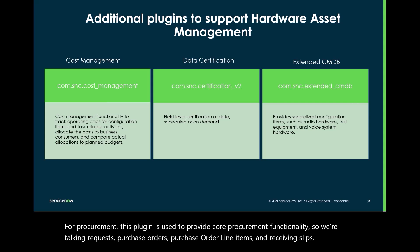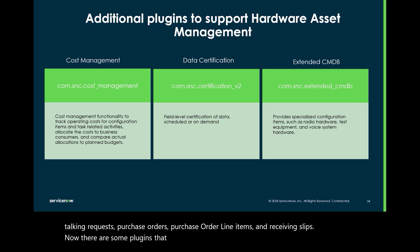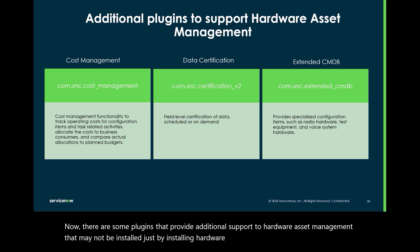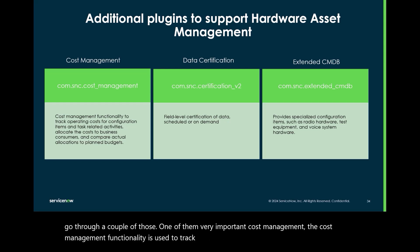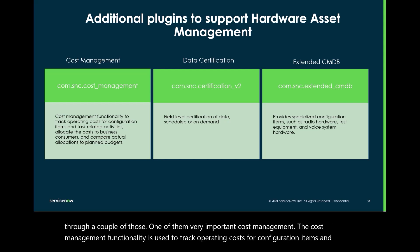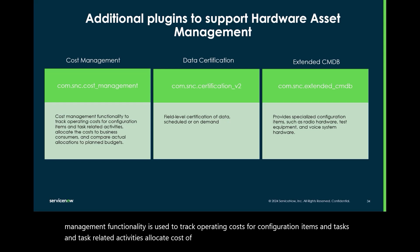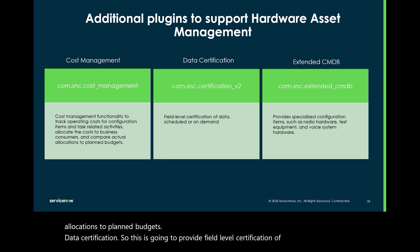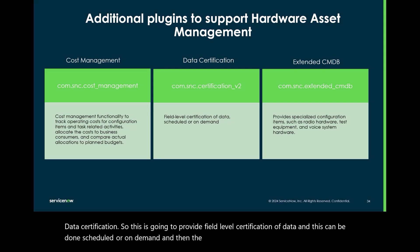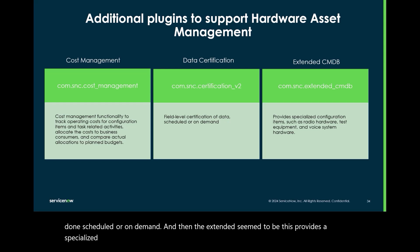There are some plugins that provide additional support to hardware asset management that may not be installed just by installing hardware asset management. One very important one is Cost Management — the cost management functionality is used to track operating costs for configuration items, tasks, and task-related activities, allocate costs to business consumers, and compare actual allocation to planned budgets. Data Certification provides field-level certification of data, and this can be done scheduled or on demand.